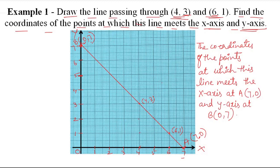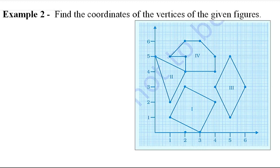Come to the next example. Example number 2 is: find the coordinates of the vertices of the given figures. There are four shapes — first, second, third, and fourth. We need to write the coordinates of each vertex. So first let's do the naming of the vertices.